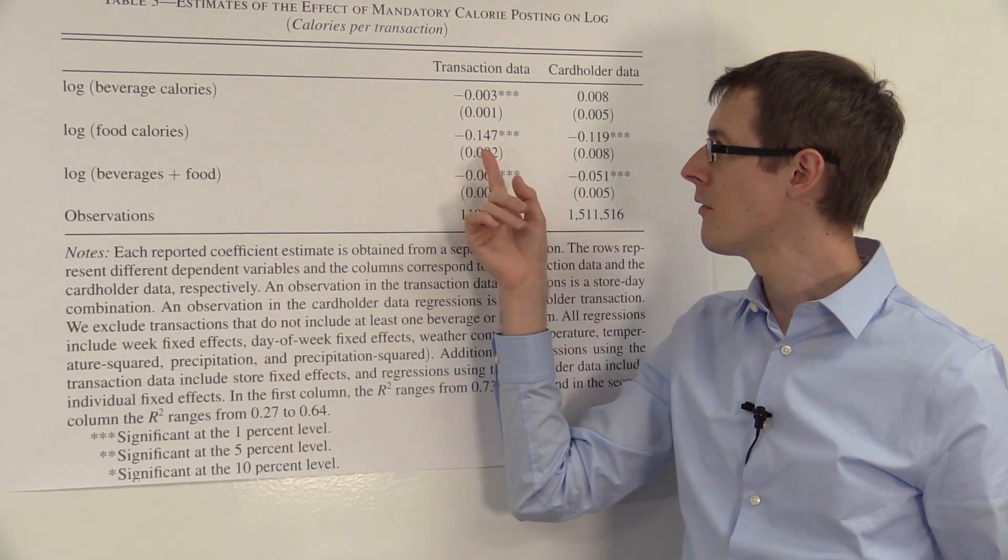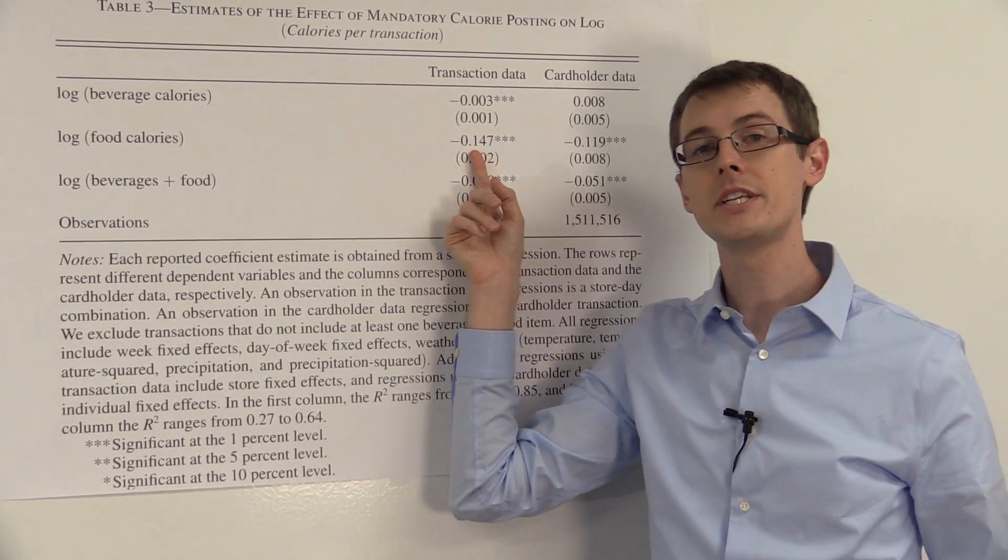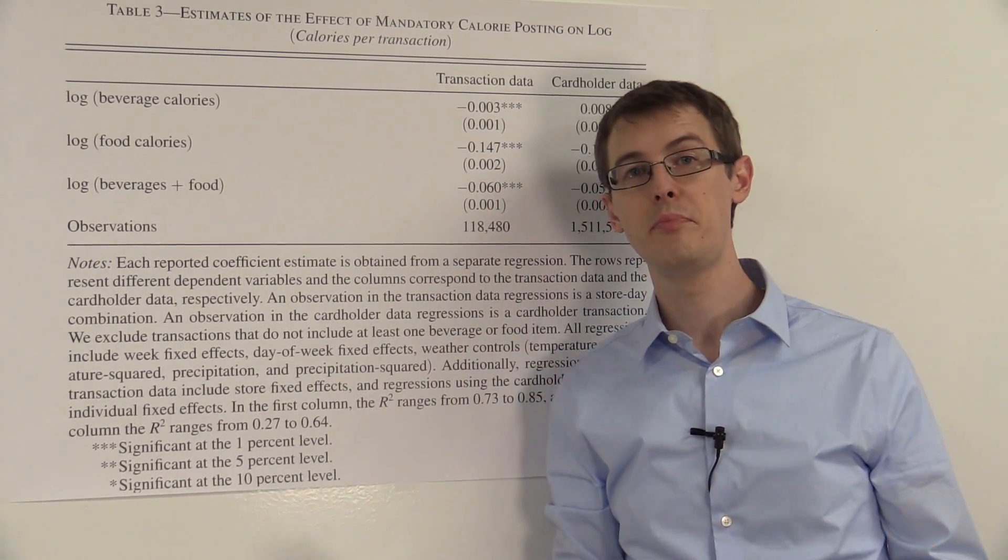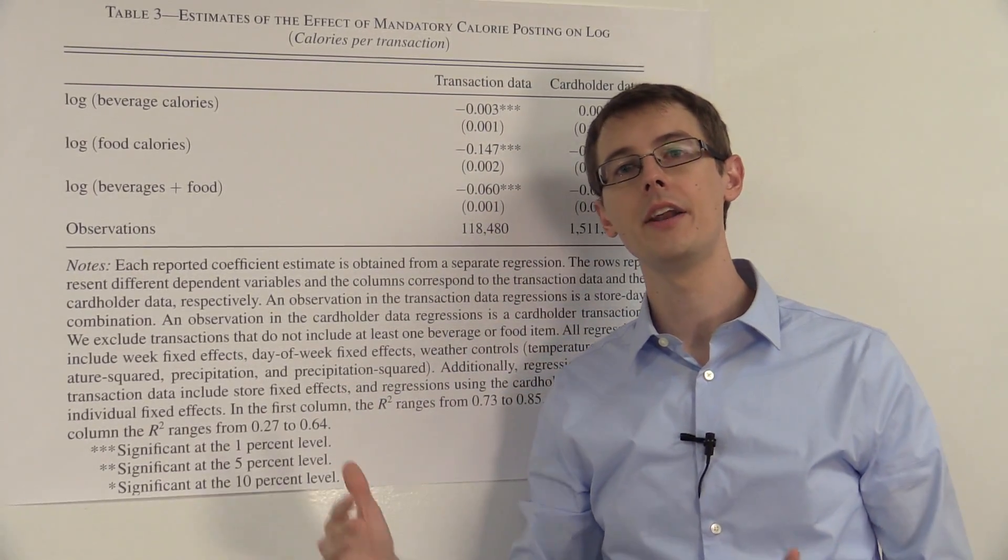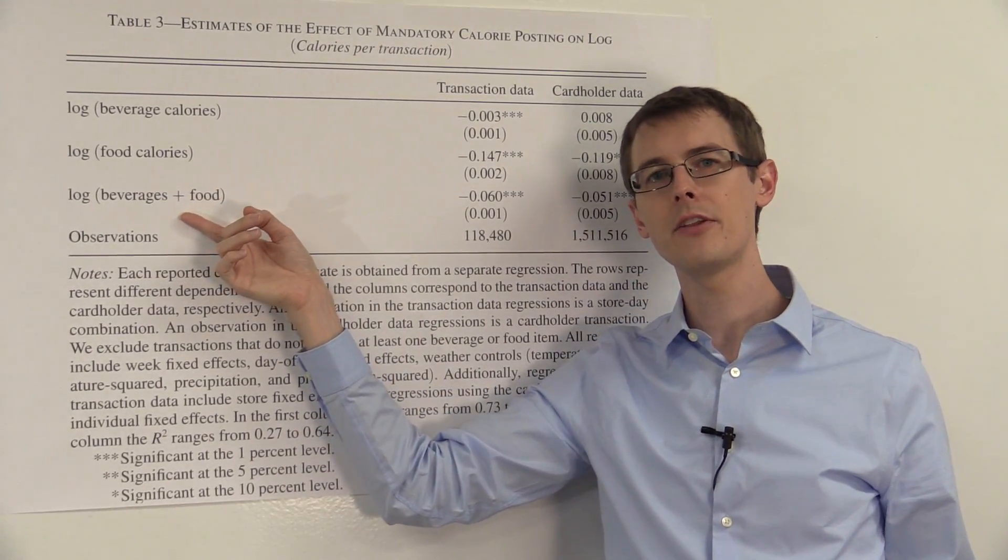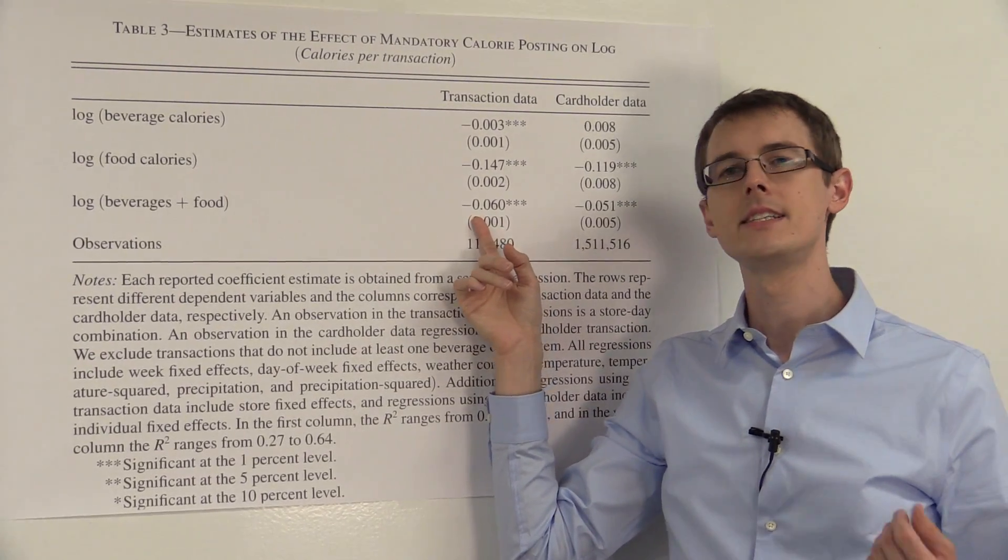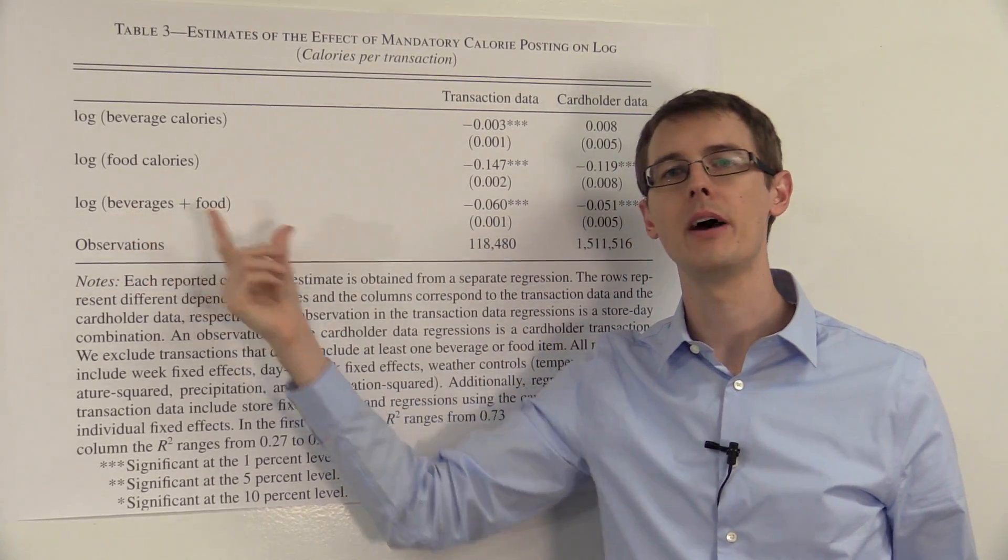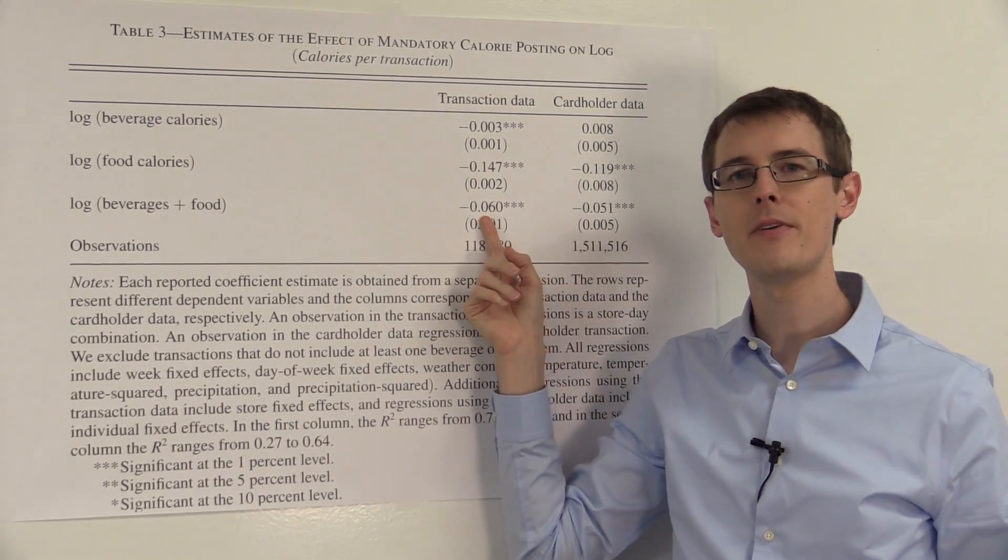Let's look at food. However, for food, it's a minus 14.7 percentage points. So actually it seems like there's a pretty big effect of the law on food consumption. Food consumption went down. If you add food and beverage together, then we get a minus 6 percentage points effect on total food and beverage consumption. So that's their main finding in the paper.